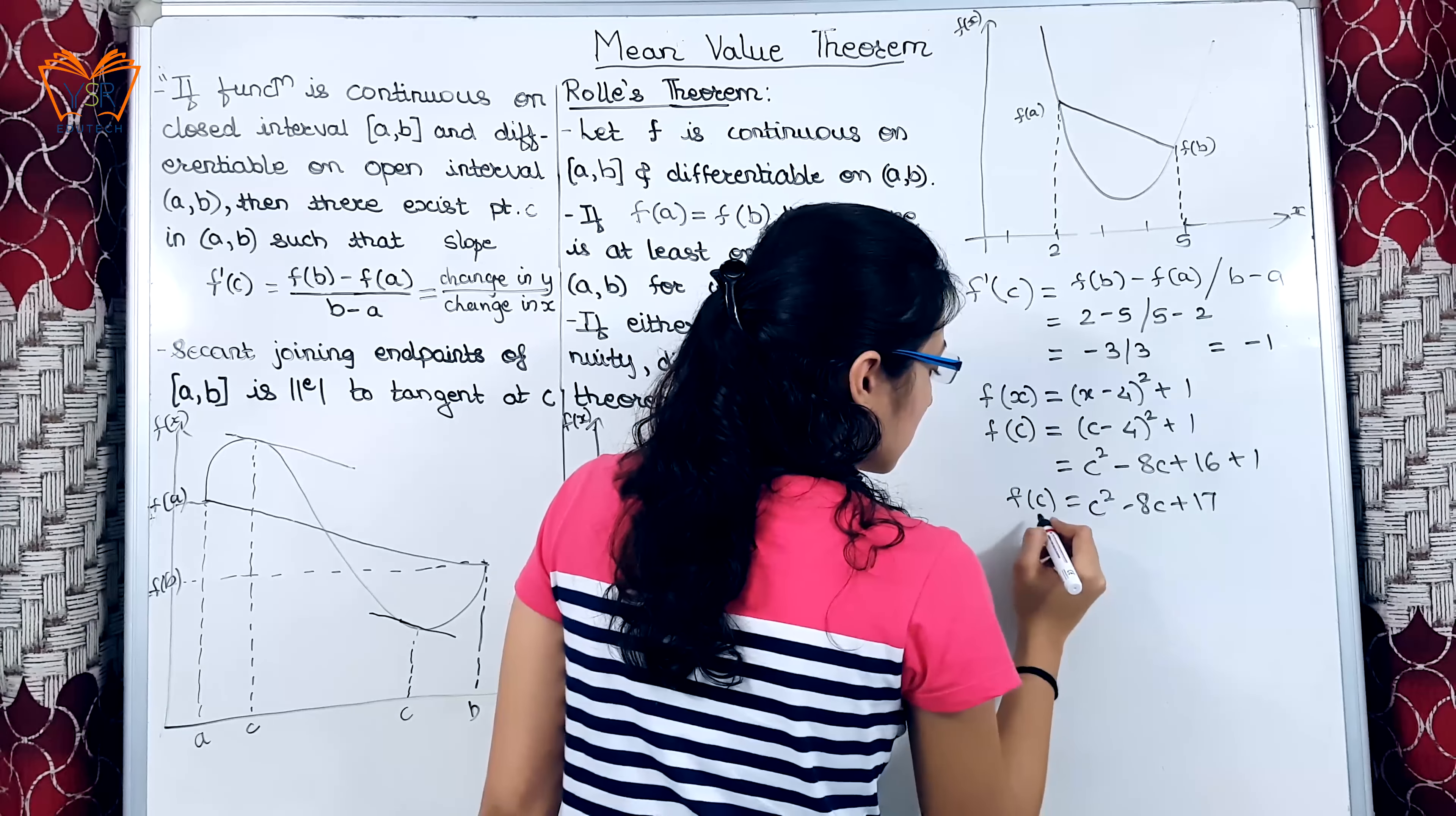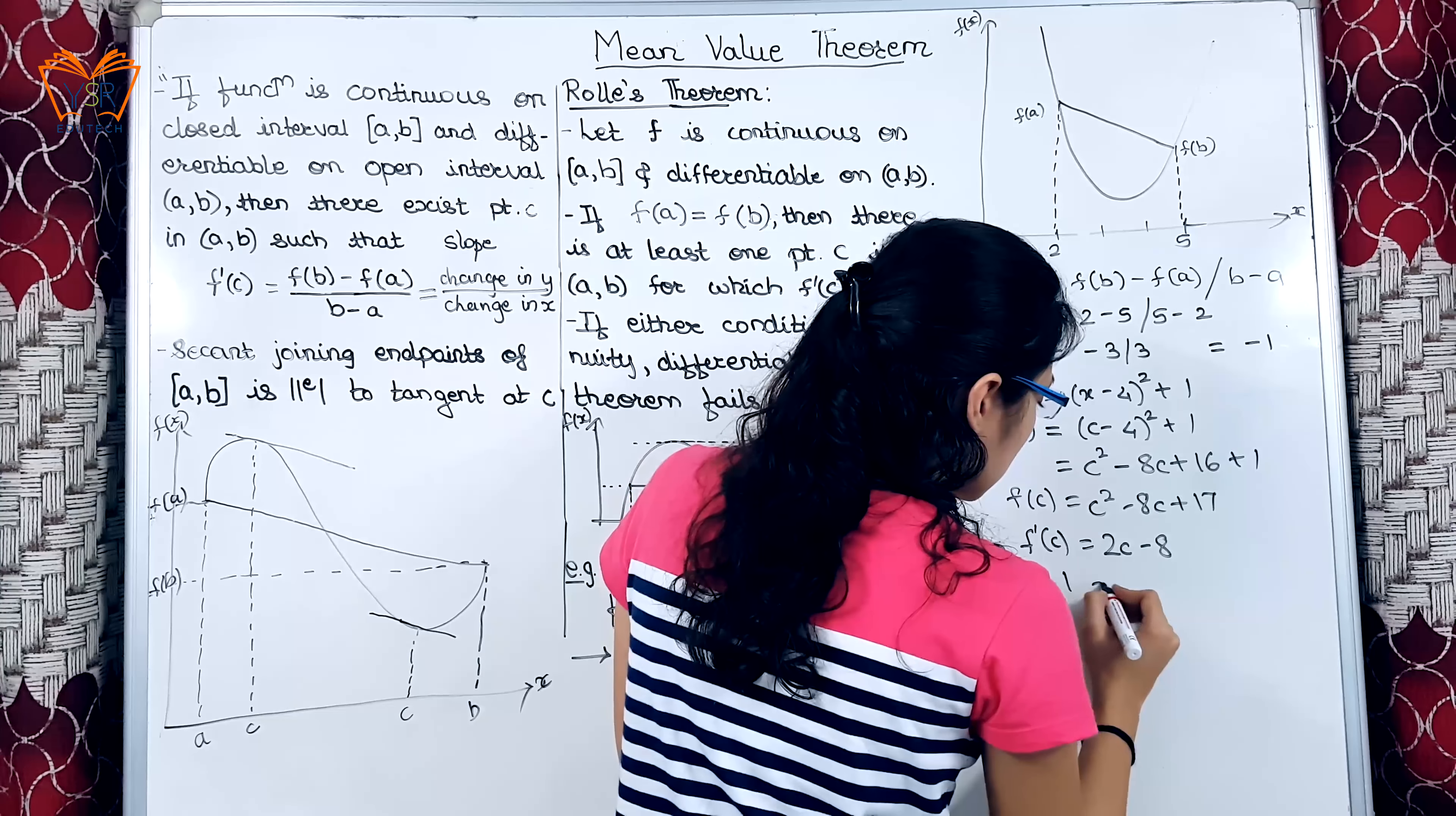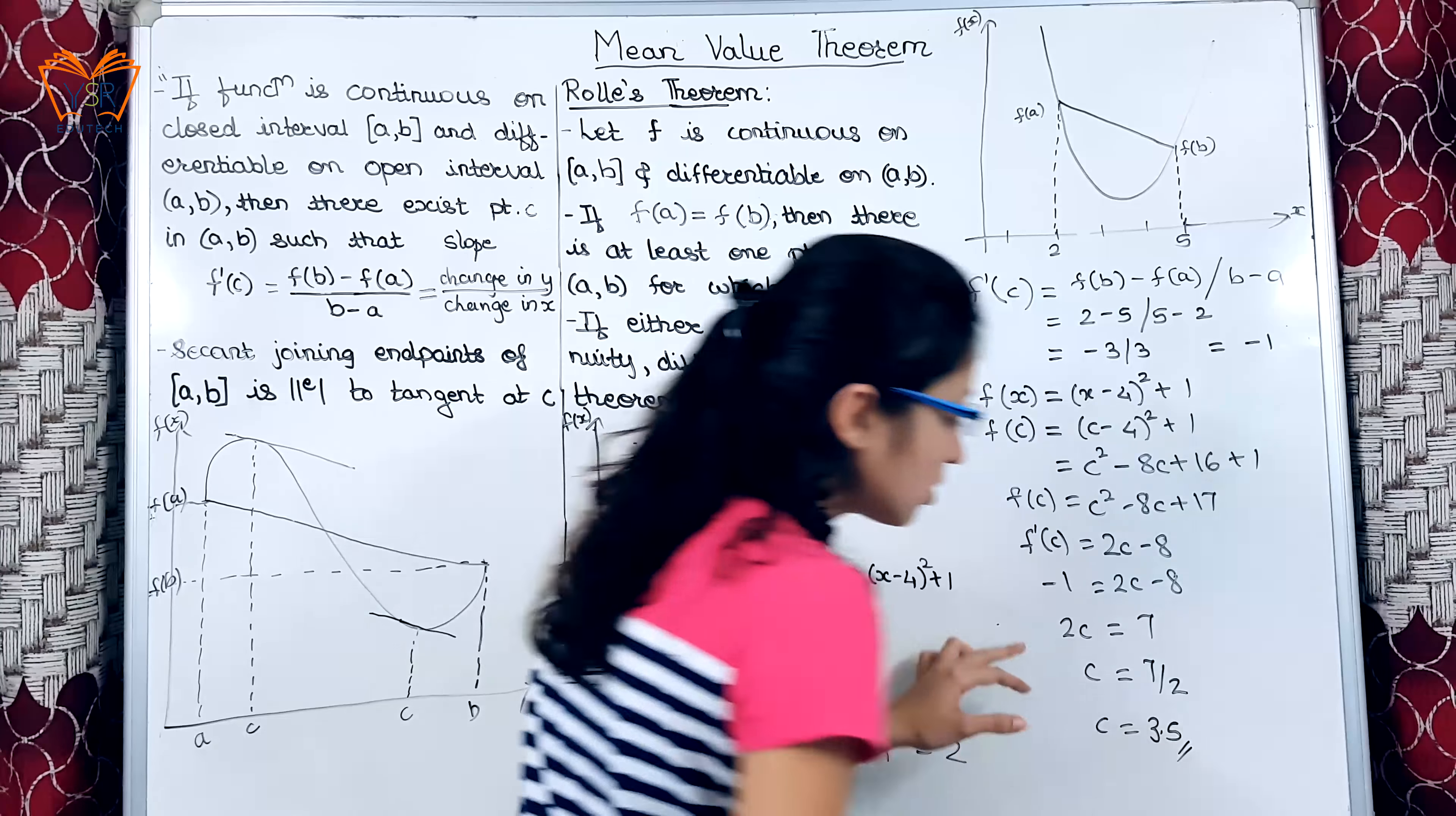Now, this is f(c). We have the value of f'(c). So, we will differentiate it. After differentiating, we get 2c - 8. f'(c) is -1 = 2c - 8. 2c will be 7. So, this gives c = 7/2 or c = 3.5.